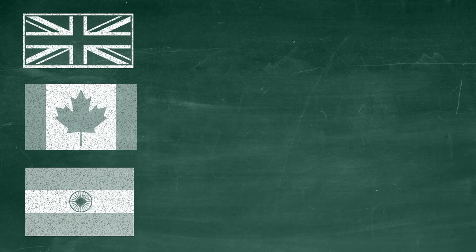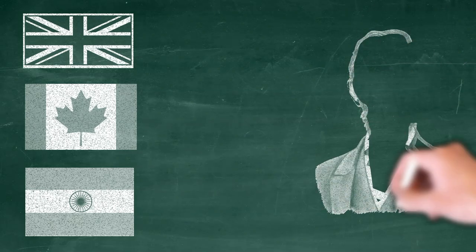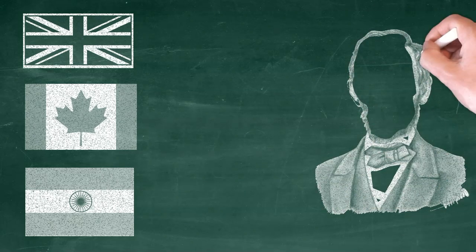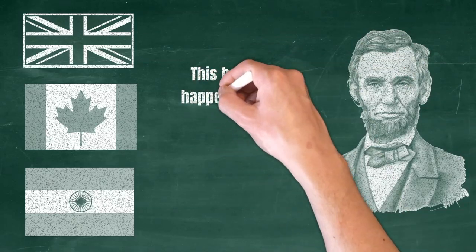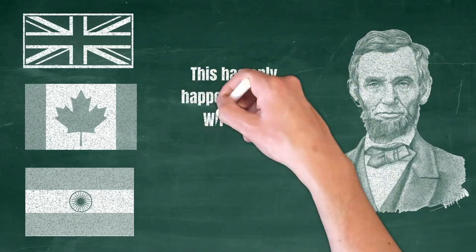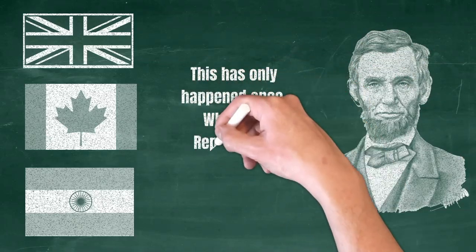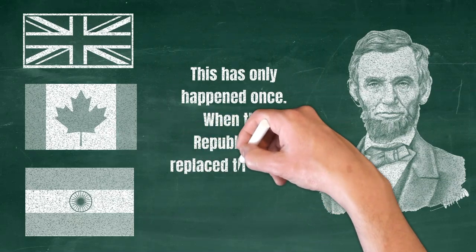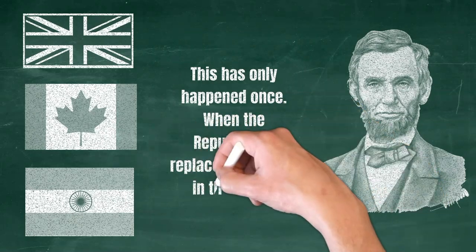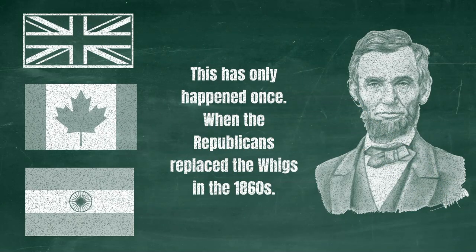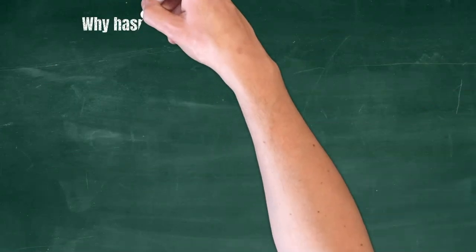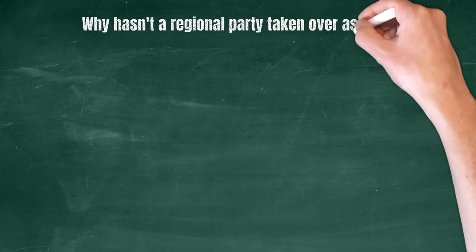So why hasn't that happened in the U.S.? Well, it has — once. With the Republicans in the 1860s, when they displaced the Whigs as the second major party in the country, because the latter broke itself apart over the issue of slavery. So a more accurate question would be: why hasn't it happened since then?